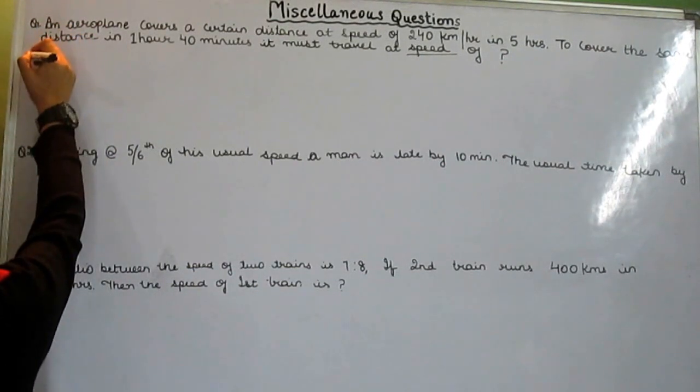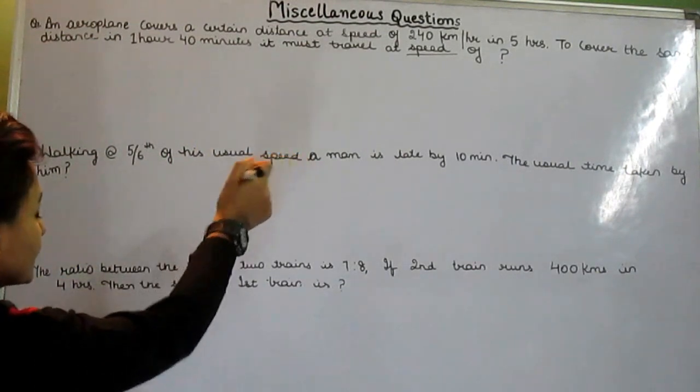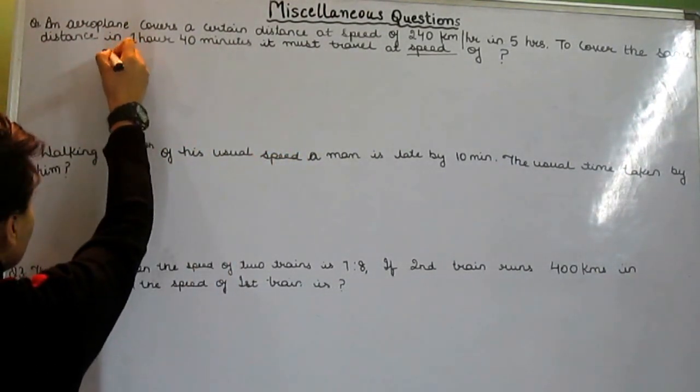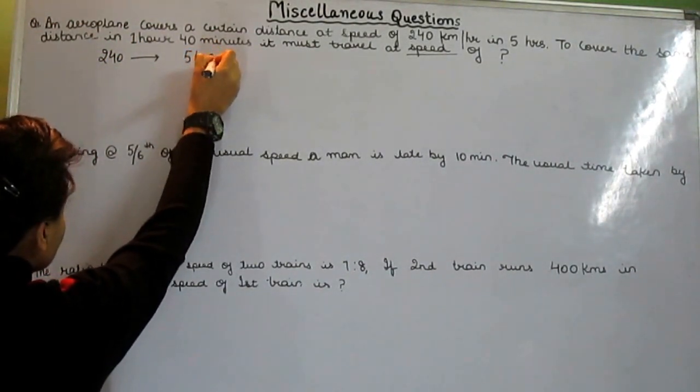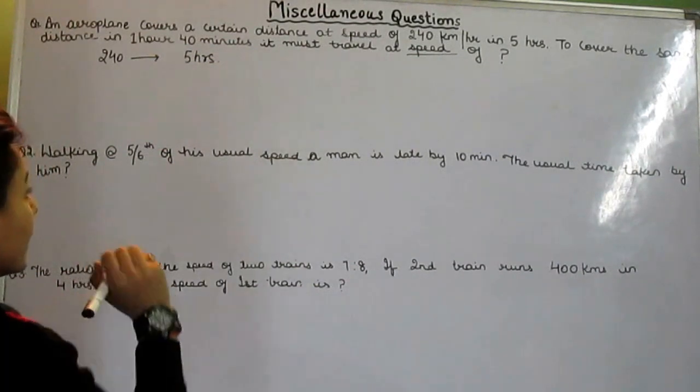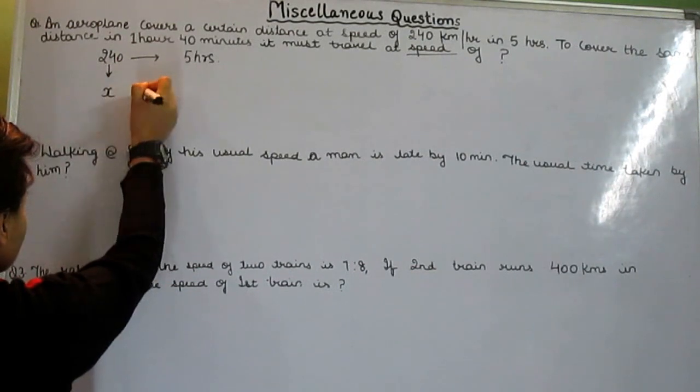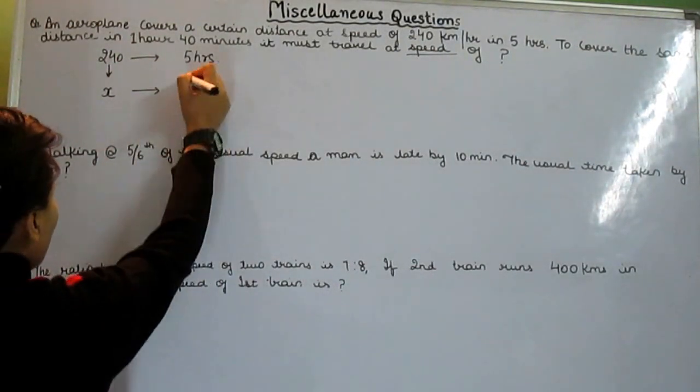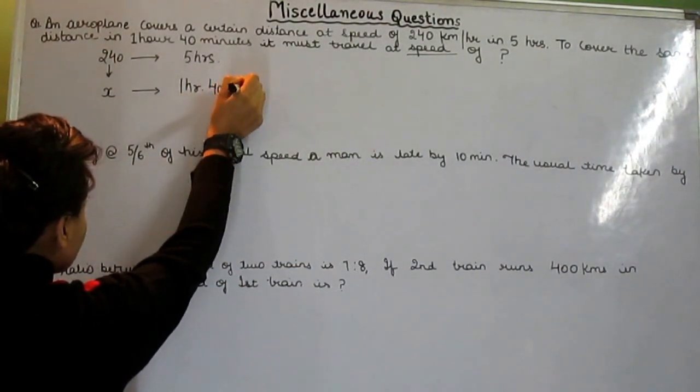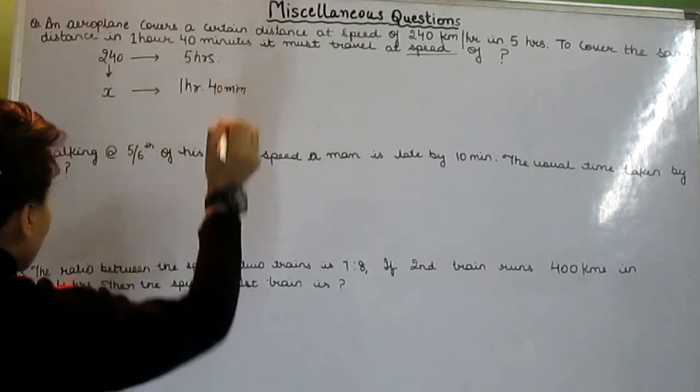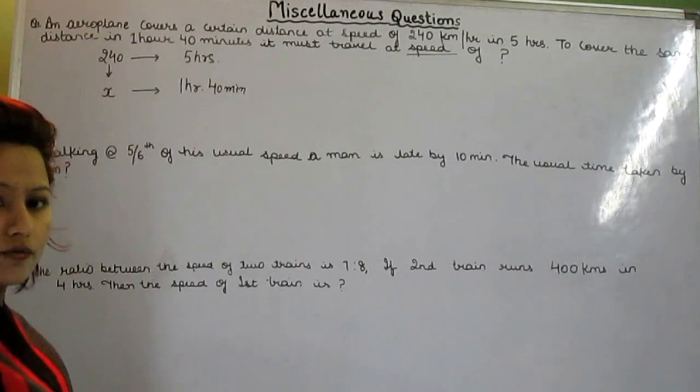An aeroplane covers a certain distance at speed of 240 kilometers in 5 hours. And to cover the same distance, this can be x, to cover the same distance in 1 hour 40 minutes, it must travel at speed of what? Well, we have to get the value of x here.